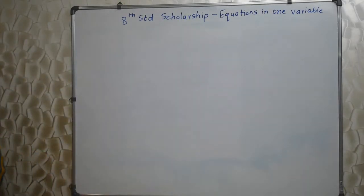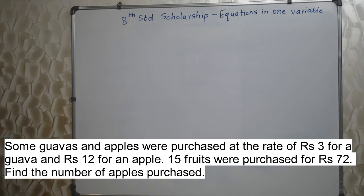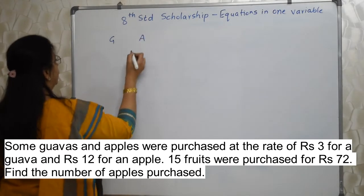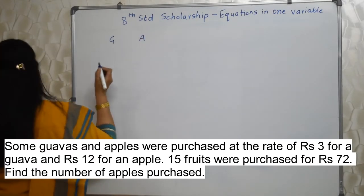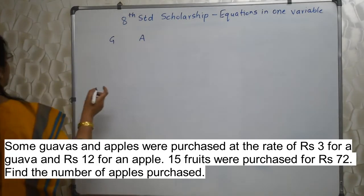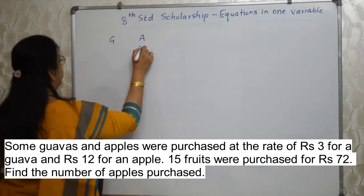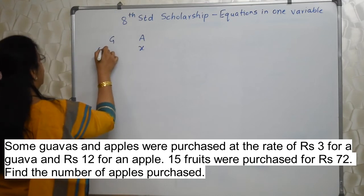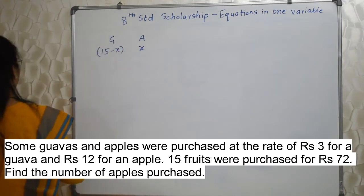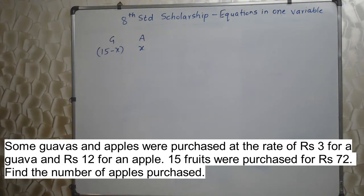Students, first a sum will appear on your screen. Some guavas and apples were purchased at the rate of Rs 3 for a guava and Rs 12 for an apple. 15 fruits were purchased for Rs 72. Find the number of apples purchased. There are guavas and apples. Total there are 15 fruits. We don't know how many are guavas and how many are apples, but we can assume apples as x. So if apples are x, obviously guavas will be 15 minus x.